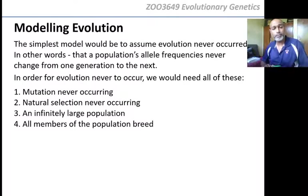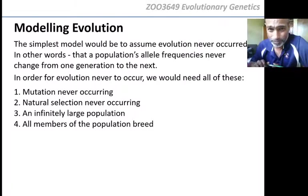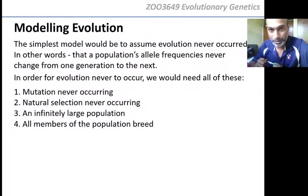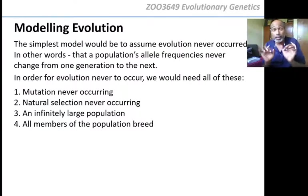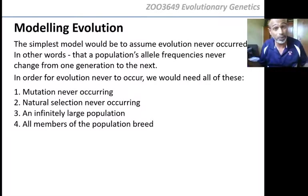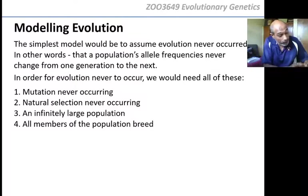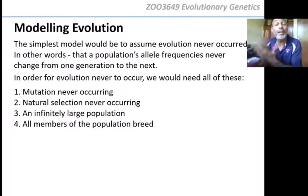What about the fourth condition? All the members of a population must breed. Is that true? Does every individual breed? You know there's a struggle to breed thanks to sexual selection — there's a variance in mating success, so not everyone is going to breed. In order for no evolution to occur, the allele frequency has to be the same in this generation and the next. You can't have some breeding and some not breeding — everybody has to breed so that all their alleles go to the next generation with no change in frequency.